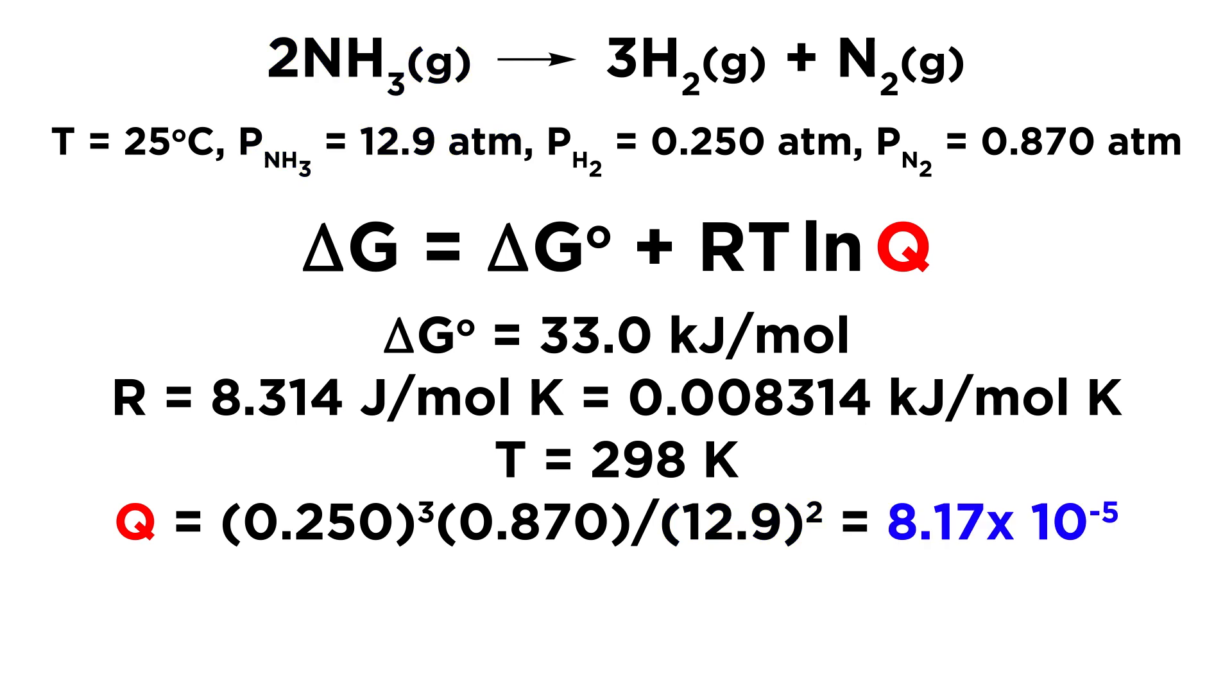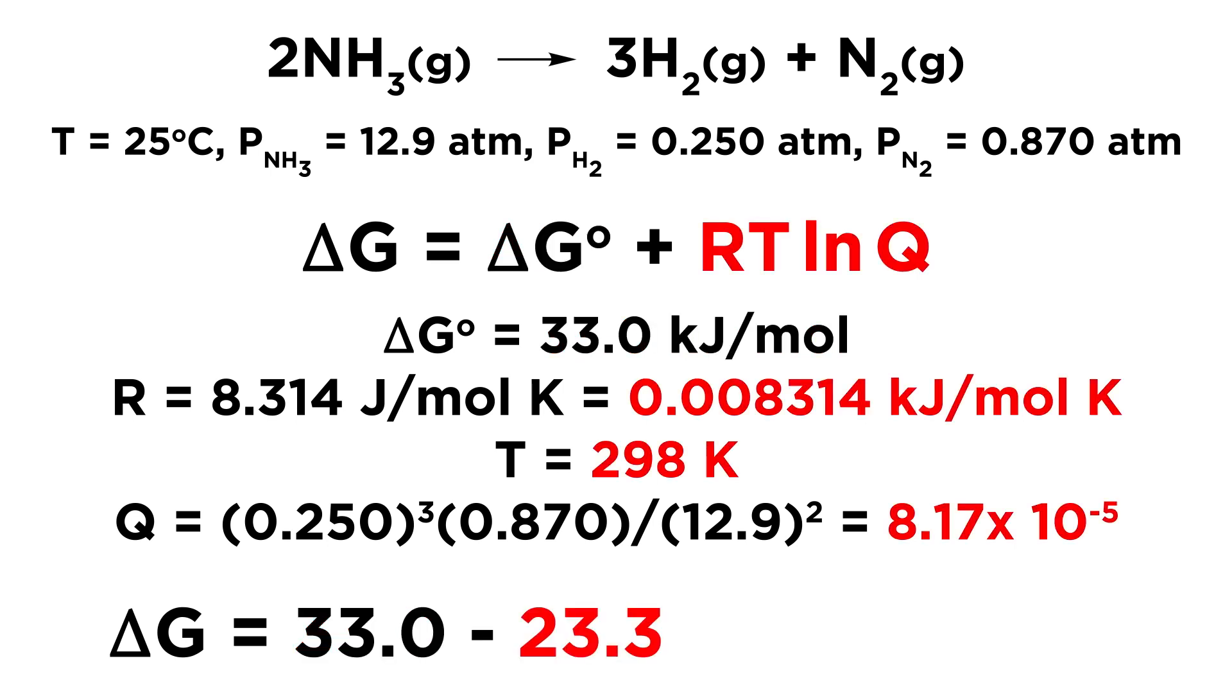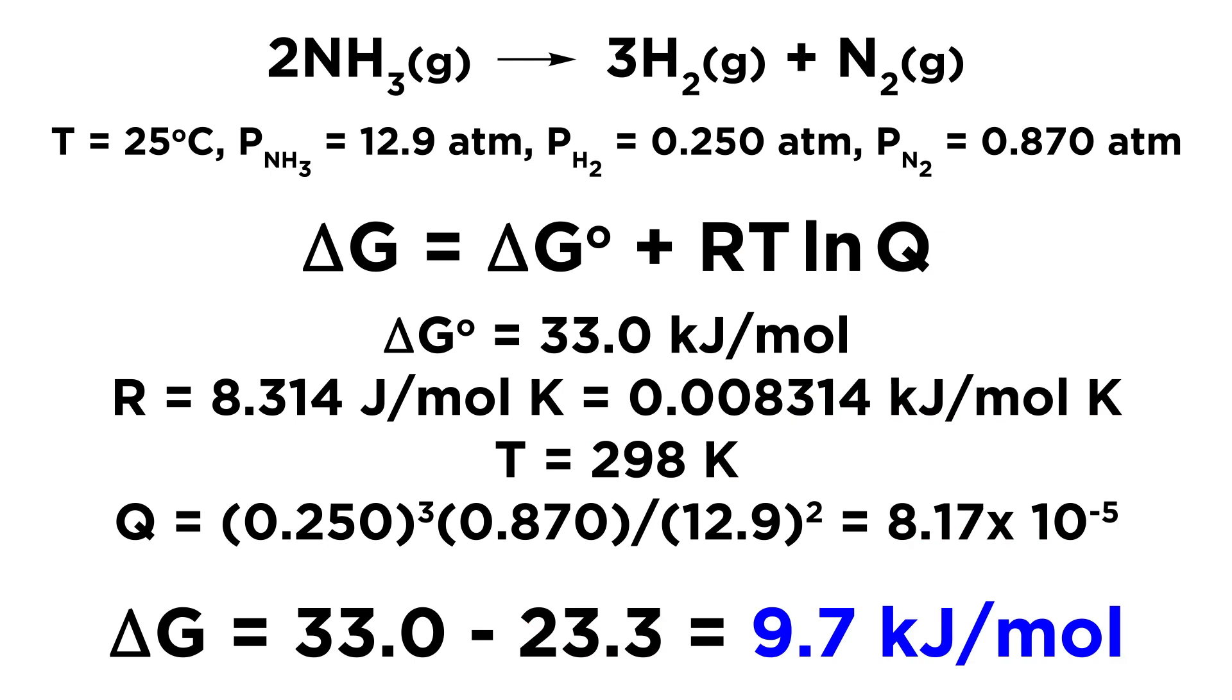And so if we do the arithmetic, Q is going to be equal to 8.17 times 10 to the negative 5. Now to get delta G, let's first take our standard free energy change value, that's 33.0, and we'll subtract from that RTlnQ, so we can put that in the calculator all at once. That will come out to 23.3, and that gives us a delta G value of 9.7 kilojoules per mole.